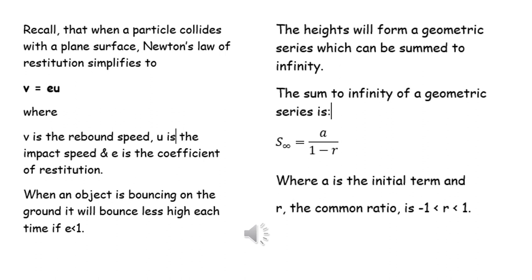If an object is bouncing on a horizontal surface, you could be asked to work out the total distance traveled in so many bounces or completely. You can look at the heights that things have fallen and risen, and these will create a GP. You might need to use the sum to infinity to find the total distance that's been traveled.